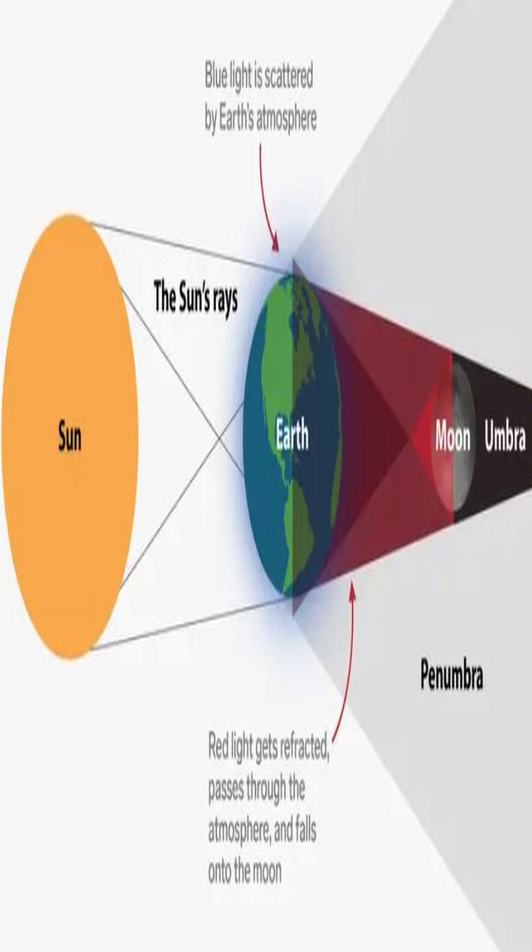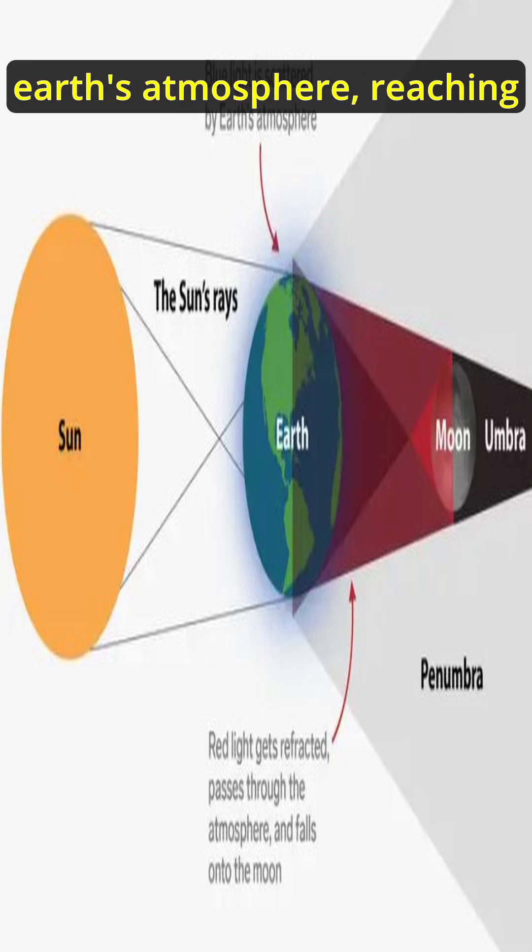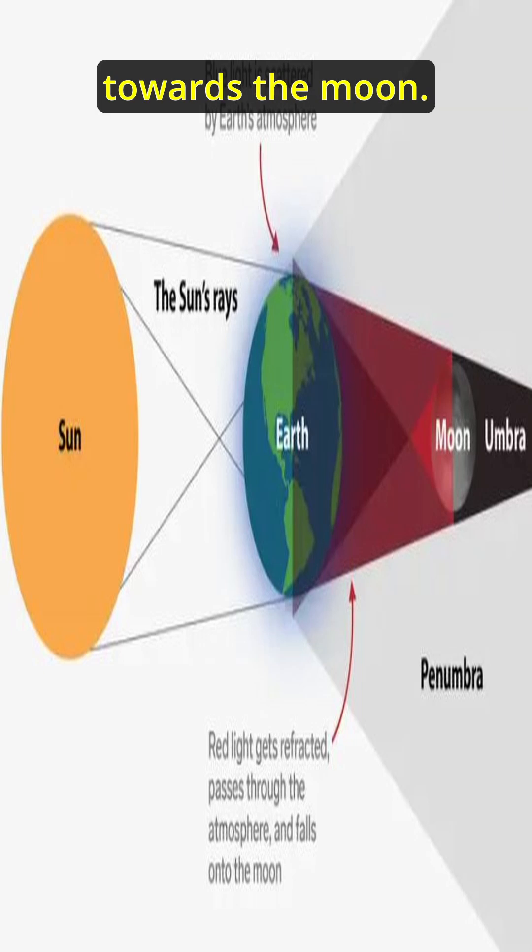During lunar eclipse, sunlight passes through earth's atmosphere reaching towards the moon. Our atmosphere filters out the blue light and the violet light. It bends and scatters, so we see the sky as blue.